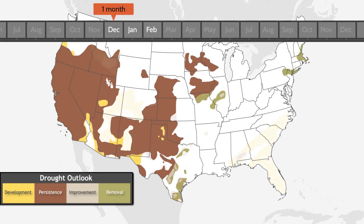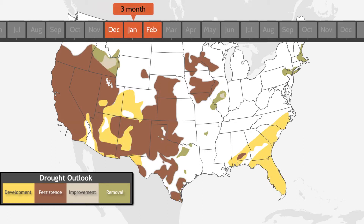Each category refers to likely conditions at the end of the time period for the map. For a one-month outlook, the category on the map refers to conditions at the end of that month. For a three-month outlook, the category looks ahead more than 90 days.